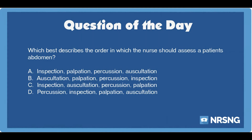Which best describes the order in which the nurse should assess a patient's abdomen? A. Inspection, palpation, percussion, auscultation. B. Auscultation, palpation, percussion, inspection. C. Inspection, auscultation, percussion, palpation. D. Percussion, inspection, palpation, auscultation.